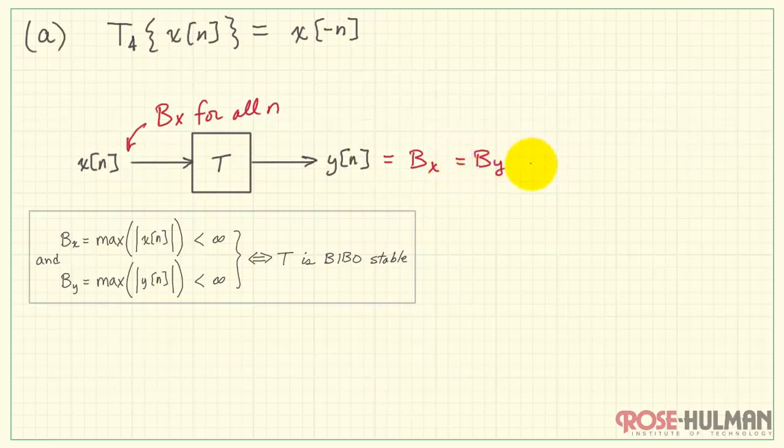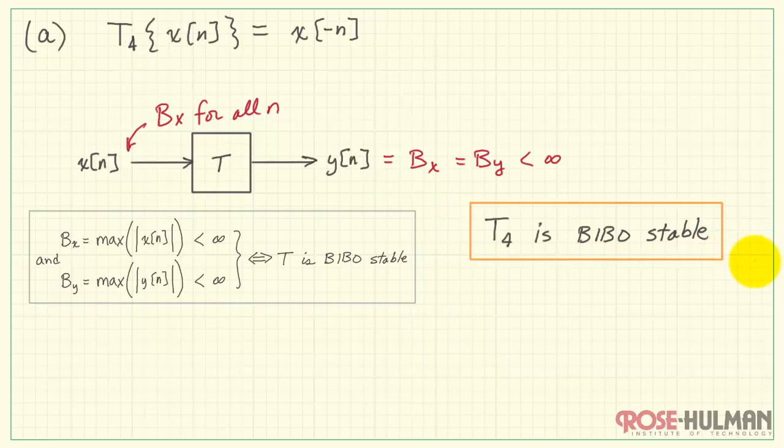Now the output has a bound also of BX. The minus N does nothing to change the actual values of the input sequence. It just reorders them. Therefore, we conclude that BY is finite. And T4 then is bounded input, bounded output, stable.